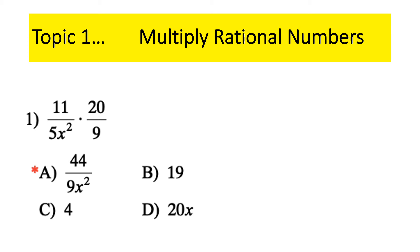Topic one: how do you multiply rational numbers — how do you multiply two fractions together? In algebra one, there are now numbers and variables. Remember, when you multiply any two fractions, it's tops with tops, bottoms with bottoms — numerator times numerator, denominator times denominator. And if you can, cross-reduce. If you don't cross-reduce, you have the extra step of reducing the fraction at the end.